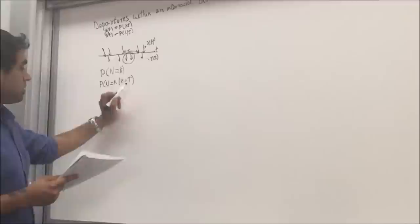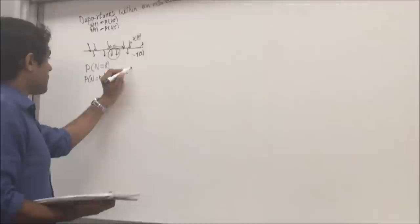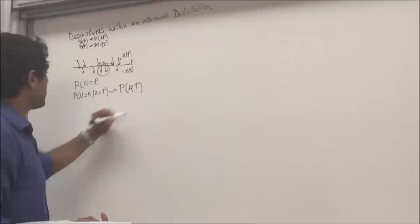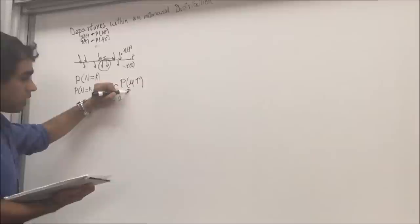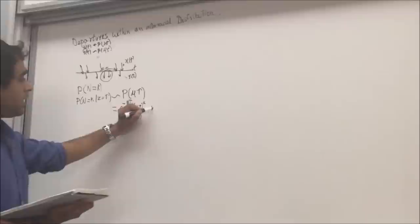That conditional probability equals a Poisson process with parameter mu*tau, which is the Poisson process for departures. That is equal to e raised to minus mu*tau, times mu*tau raised to k, divided by k factorial, where k is 0, 1, 2, etc.